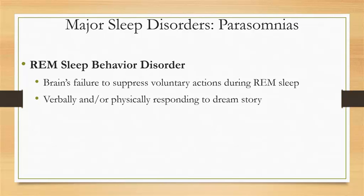Although it can occur at any age, REM sleep behavior disorder typically occurs in males over the age of 60. Once it does emerge, it is a chronic condition that tends to progressively become worse. Chronic REM sleep behavior disorder may be an early symptom of an underlying neurological disorder, such as Parkinson's disease or Alzheimer's disease. Temporary episodes can be triggered by antidepressant medications, excessive caffeine use, or alcohol withdrawal.